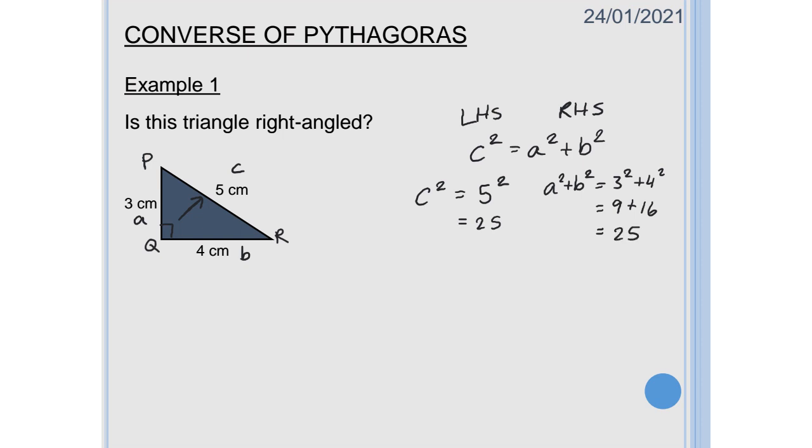So what does that mean for us? Well we know that with Pythagoras' theorem that A squared plus B squared is equal to C squared. So if I get the same answer from my left hand side as I get from my right hand side then that confirms for me that proves that the triangle is right angled.